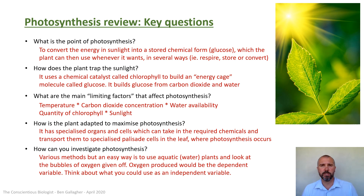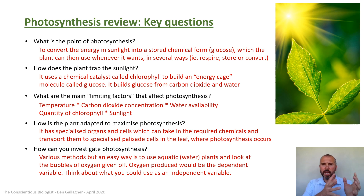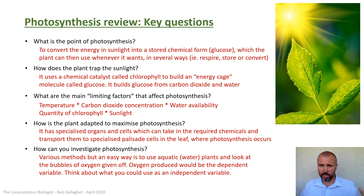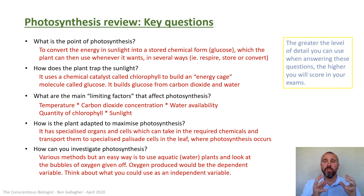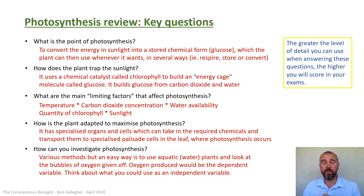As with all experimental questions, the key things are: state your aim — how does your independent variable affect your dependent variable? Keep the experiment fair by controlling all other limiting factors. Make it reliable by repeating multiple times to eliminate anomalous data and calculate a reliable mean. Please go back and review how to plan and evaluate experiments — it's a vital skill. Greater detail in your answers always scores higher. Those questions essentially summarize everything you need to know about photosynthesis.